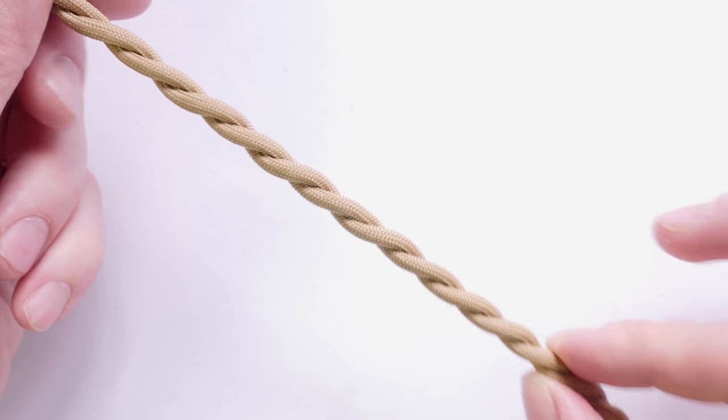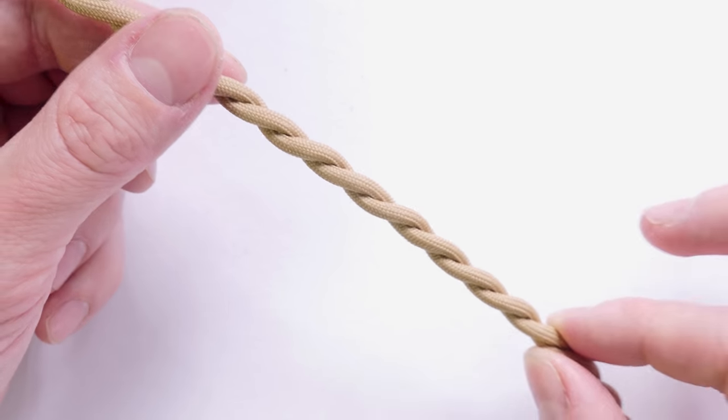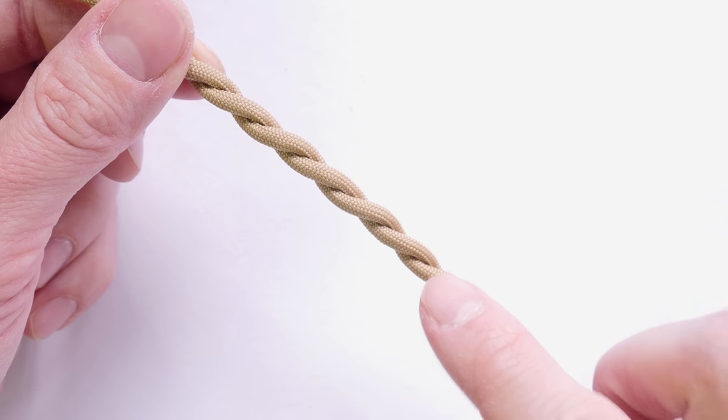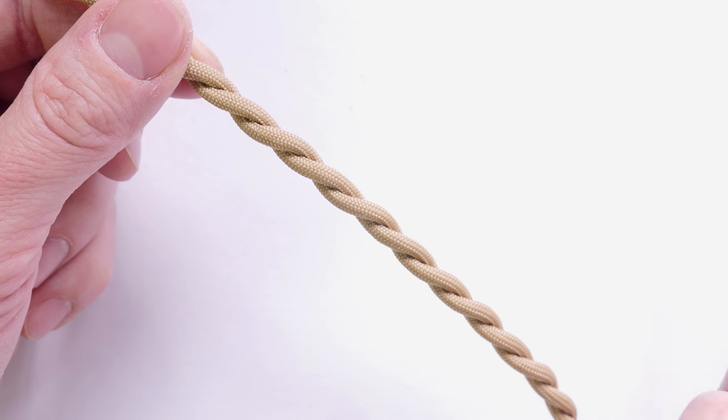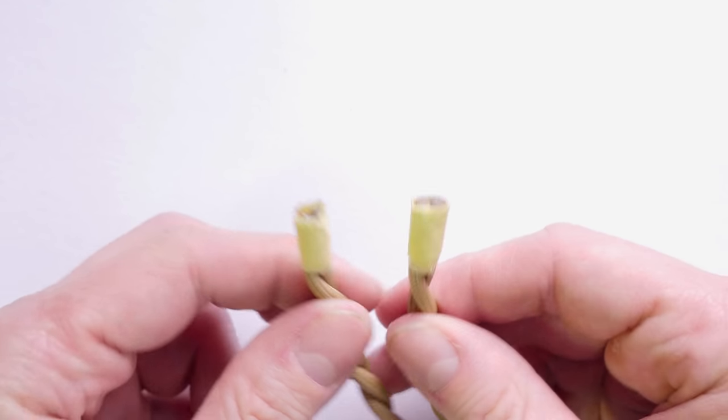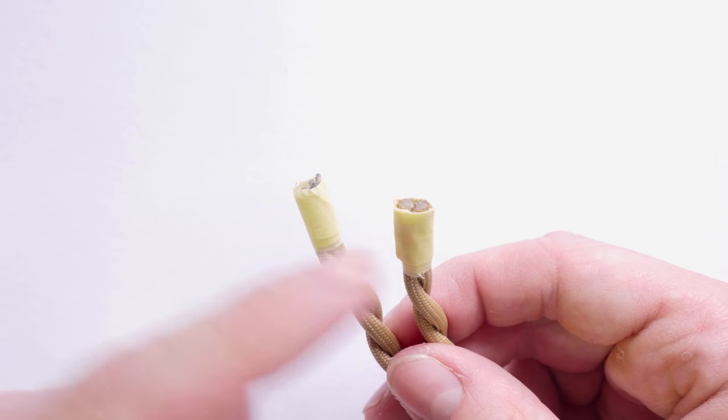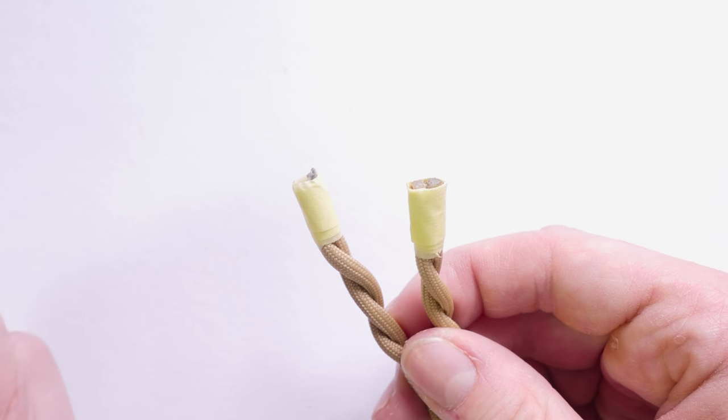After twisting our cord into a single twisted piece, we're going to get a cord about 40 inches in length. Tape up the other end as well, and then we're going to continue by covering both ends using bolo tie tips.